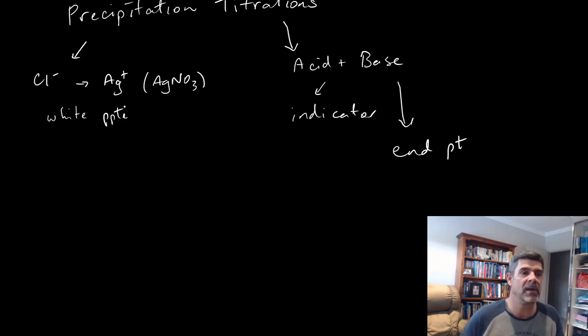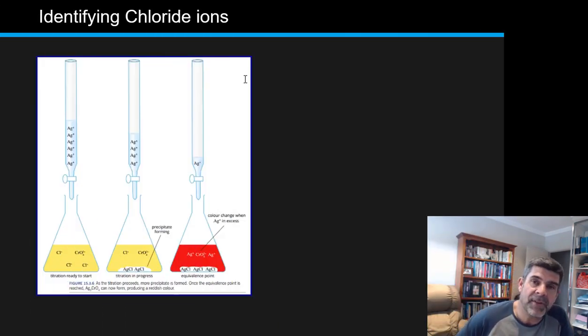So wouldn't it be nice if there was a method that we could use where we could just drop-wise add our silver solution to our chloride ions, and then know exactly when to stop? Because that would allow us to have volumes, to have concentrations, to be able to calculate numbers of moles, and to work with the stoichiometry in the same way that we do with our titrations. Well, there is. The method that I've just briefly talked through with you is something that we can actually carry out as a precipitation titration.